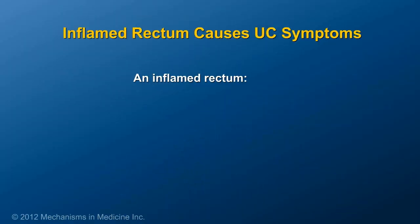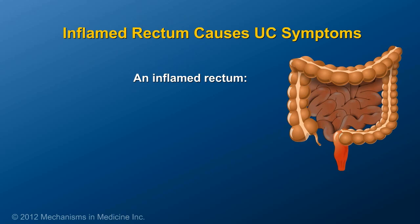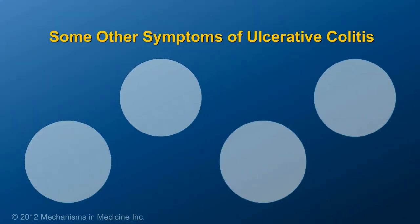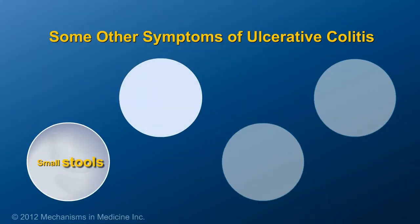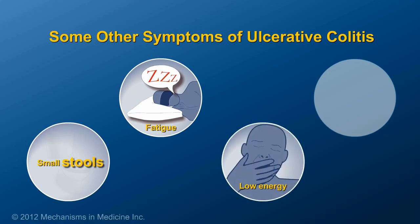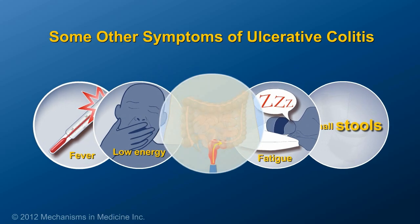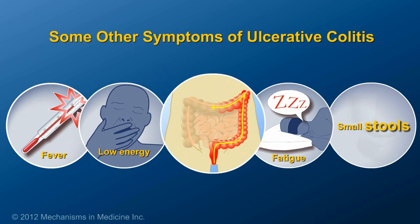Most of the symptoms of ulcerative colitis are related to the inflammation of the rectum. When the rectum is inflamed, it is not able to store contents or distinguish gas from liquid. Because of this, patients frequently feel the urge to run to the bathroom or fear that they will leak or have an accident. Other symptoms of ulcerative colitis can include frequent small stools, fatigue, low energy, and rarely, fever. Because the rectum is always involved in ulcerative colitis, patients usually experience similar symptoms regardless of how much of the colon is involved.